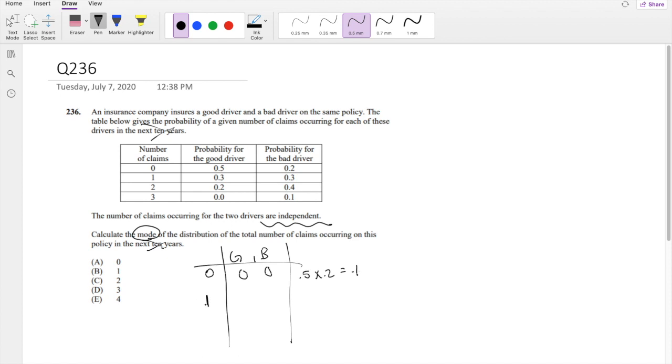When can you have 1 claim? Well, that happens when good driver has 1 and bad driver has 0, or when good driver has 0 and bad driver has 1. So good driver 1, that's 0.3. Bad driver 0, that's 0.2. And then when good driver has 0, that's 0.5. Bad driver has 1, 0.3. So this is 0.15. This is 0.06.